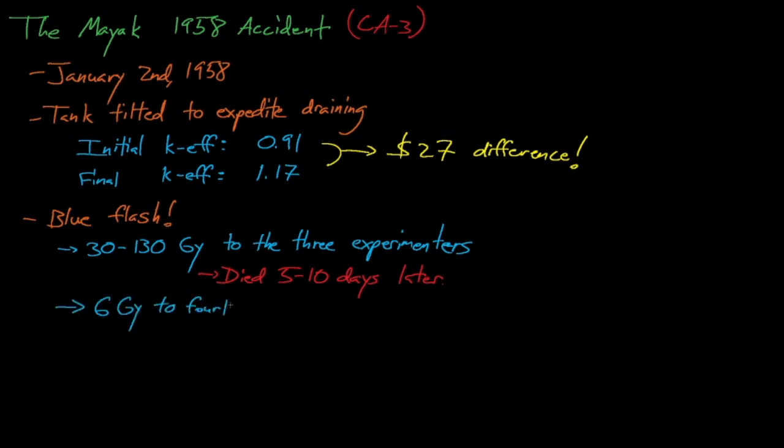A fourth worker was standing slightly farther back from the vessel during the accident, and she received approximately 6 grays of dose. She too suffered from acute radiation syndrome but ended up surviving and partially recovering. In the following years, she continued to suffer from health complications related to the accident, eventually developing cataracts in both eyes and eventually losing her sight. She died 24 years after the accident from lung cancer, and this time frame suggests that the cancer could have been caused by the dose that she received during the accident.